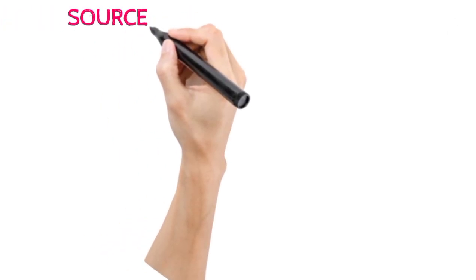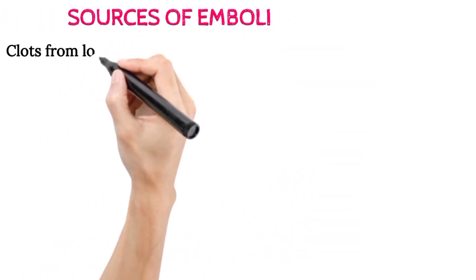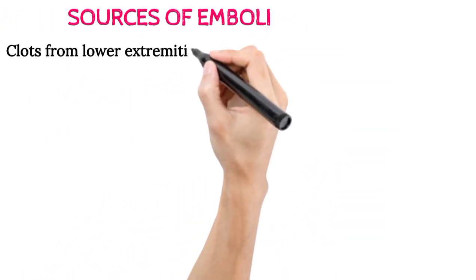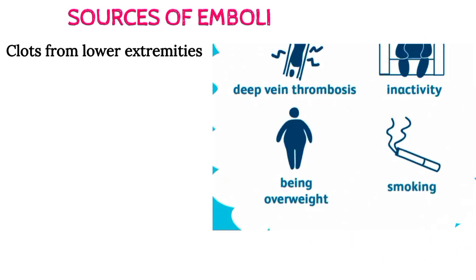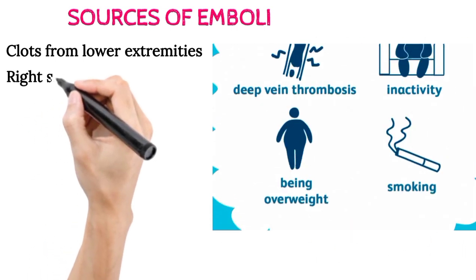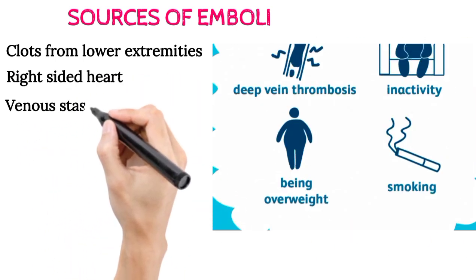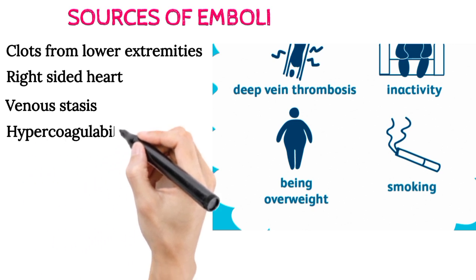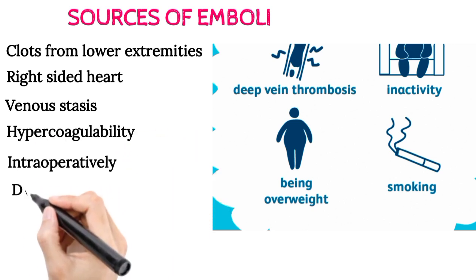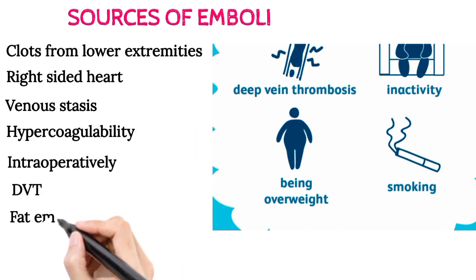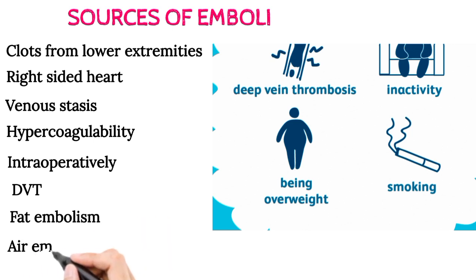Sources of emboli include: clots from the lower extremities, above the knee, and pelvic veins, or less commonly from the right-sided heart. Other sources include venous stasis, hypercoagulability, intraoperative events, deep venous thrombosis, fat embolism, and air embolism.